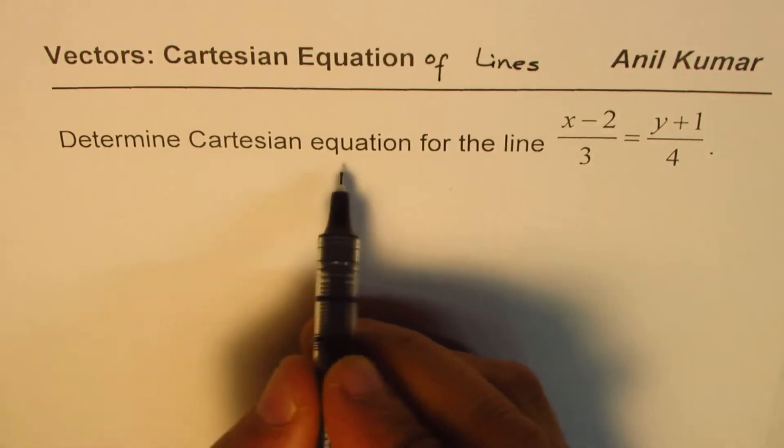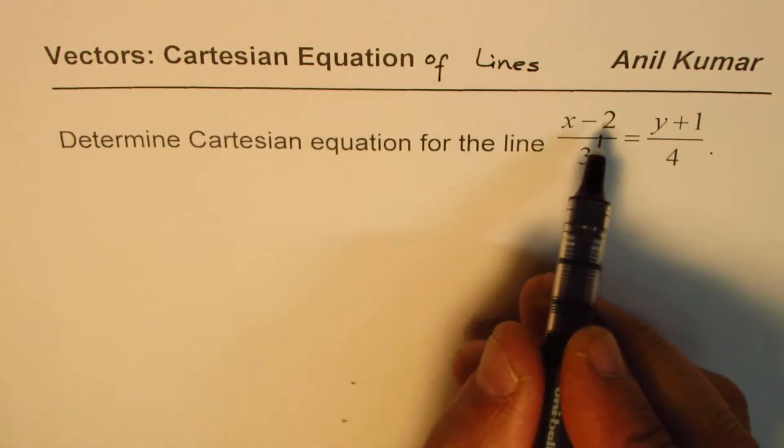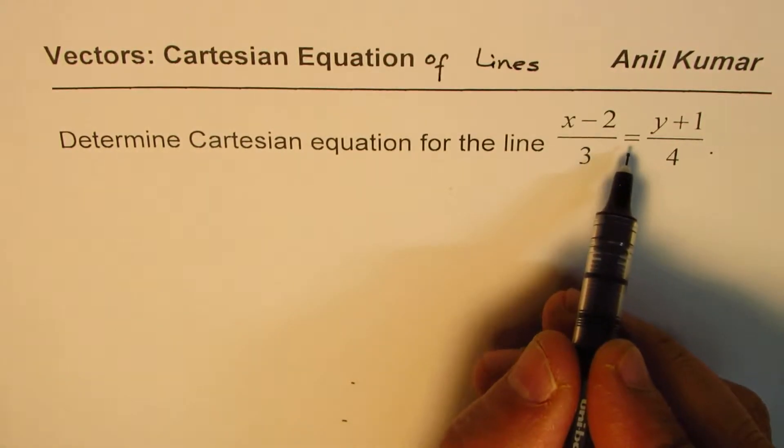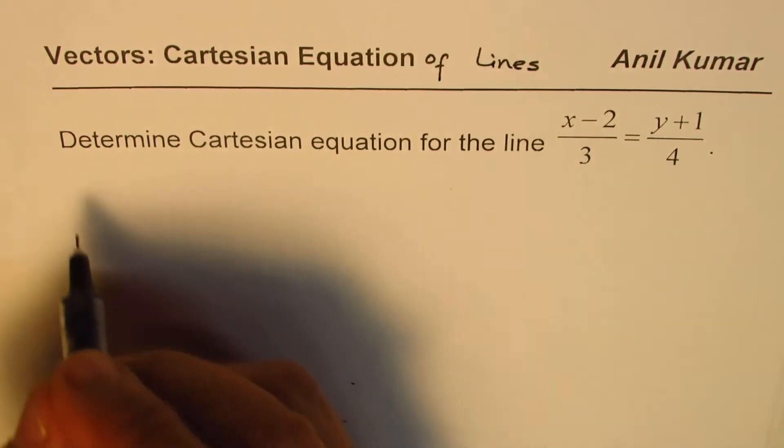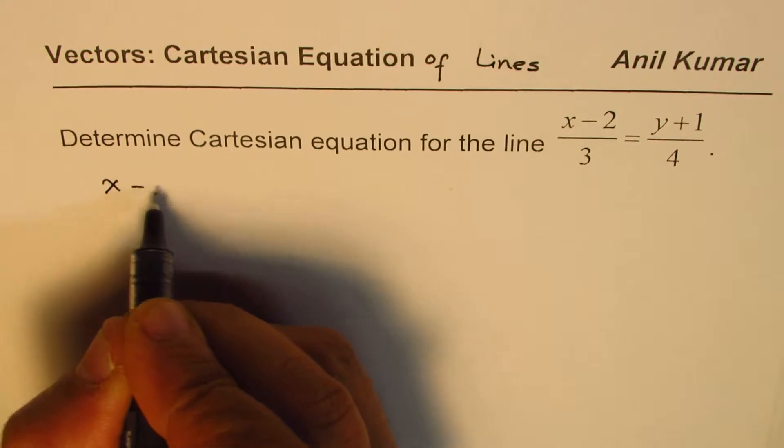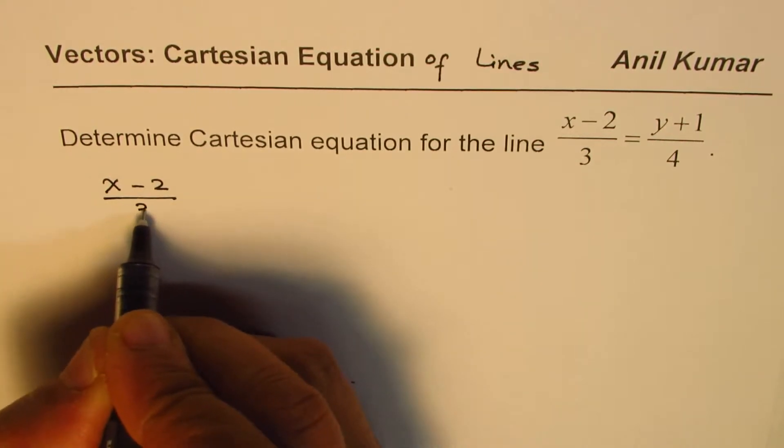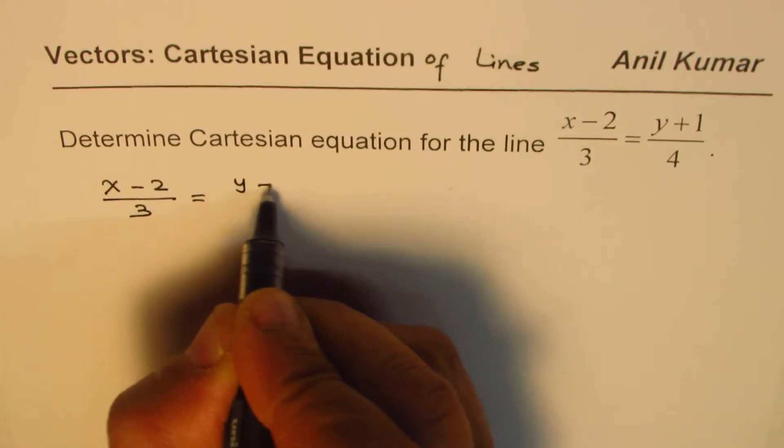The question is: determine Cartesian equation for the line (x-2)/3 = (y+1)/4. That's the symmetric form of the equation. Let me rewrite: we have (x-2)/3 equal to (y+1)/4.